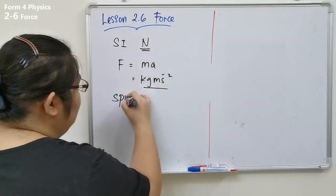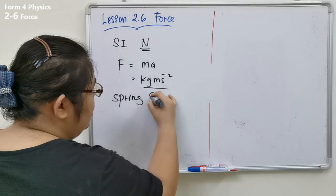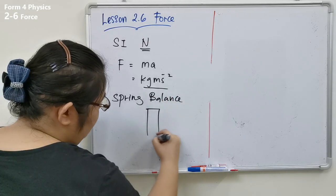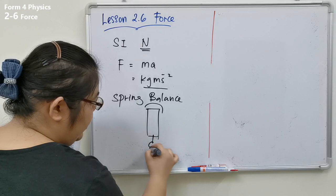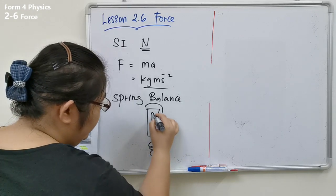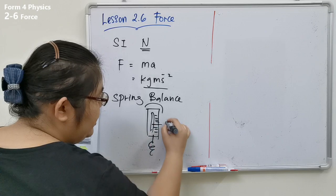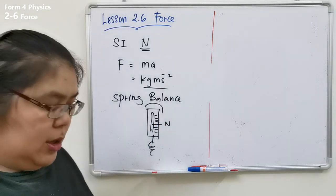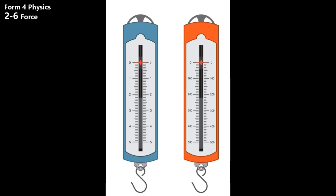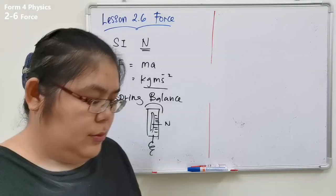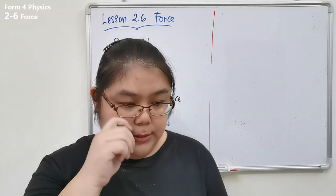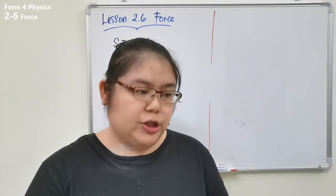A spring balance — you can refer to the notes. There is a diagram showing a spring balance with a spring inside and a reading scale. The reading shown is in newtons. I'll show you the diagram so you can see clearly what a spring balance looks like.